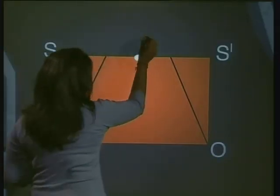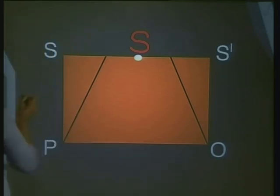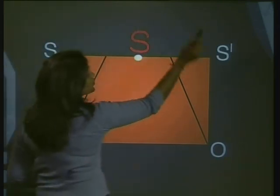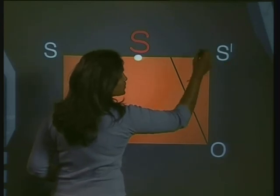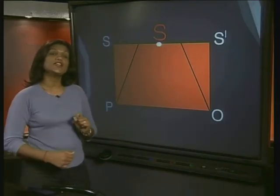Do you see that this point S has actually become the vertex of this rectangle and has moved to create this point over here as well? So we have got the rectangle SPOS'. We already know the formula for calculating the area of a rectangle. It is the base times the perpendicular height.